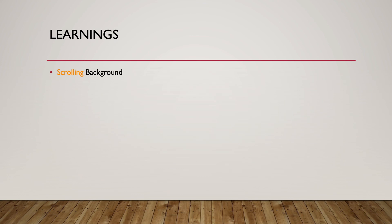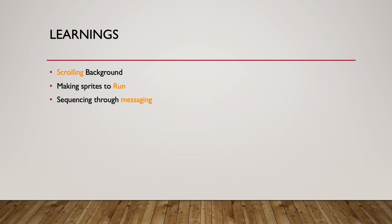Let's take a look at what we learned while making this Scratch animation story. One is scrolling background. Second is making sprites run by switching between costumes. Third is sequencing through messaging — various messages one after the other; once the message is sent, whichever sprite wants to receive it can receive the message and act upon it. We also saw how the character glides — there is a glide command to move from one position to the other position.